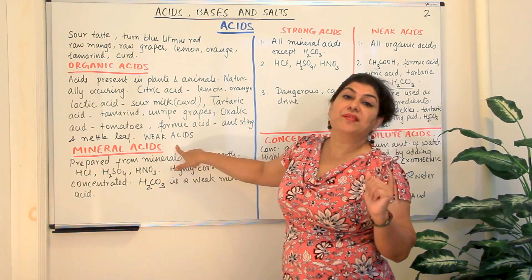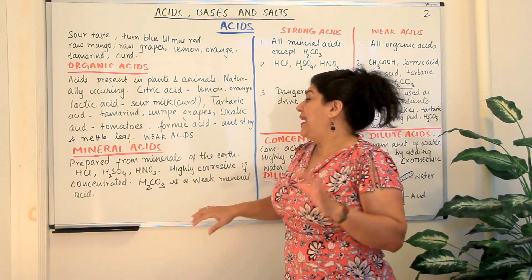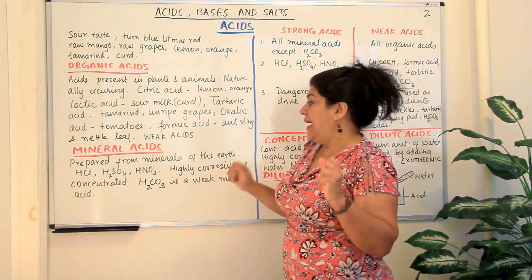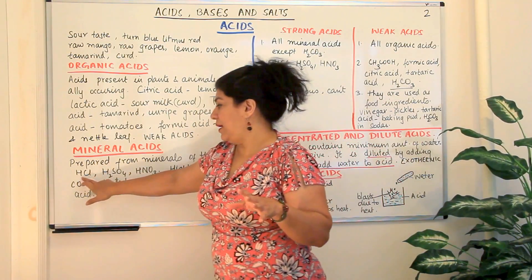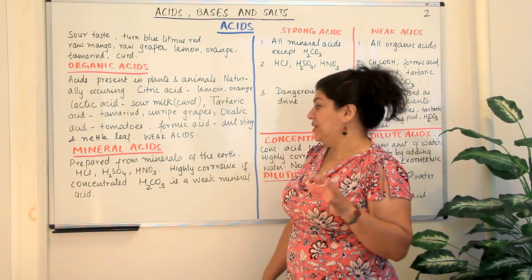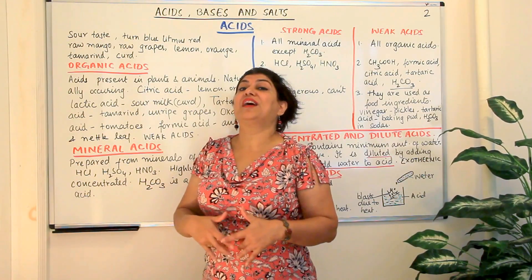Then come the mineral acids. These are the strong ones. They are obtained from the minerals which are present in the earth and these are stronger. They are not present in organisms and for example you have hydrochloric acid, sulfuric acid and nitric acid. These are really very strong. Let me tell you, hydrochloric acid is present in the gut of our stomach.